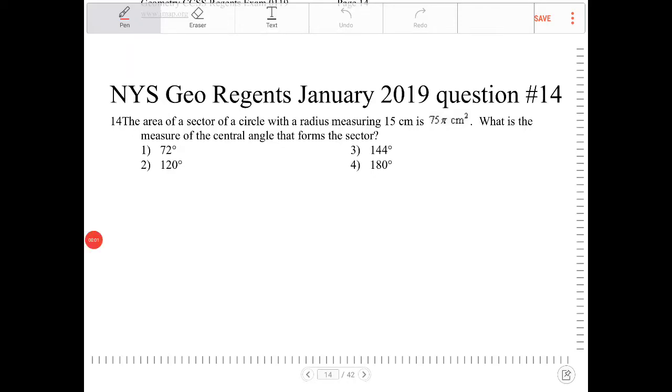The area of a sector of a circle with a radius measuring 15 centimeters is 75π centimeters squared. So let's draw that scenario. The radius is 15 centimeters. So we have that and this is 75π.